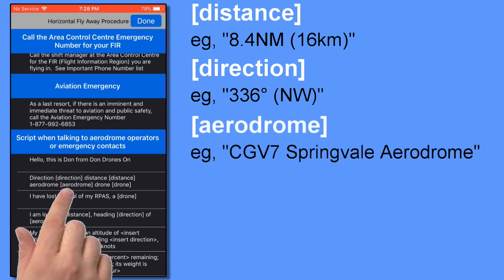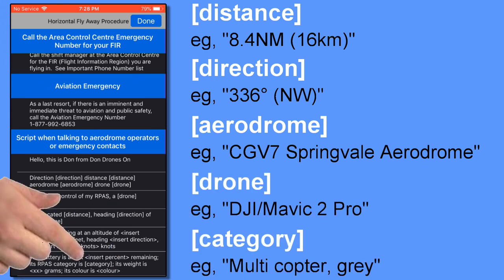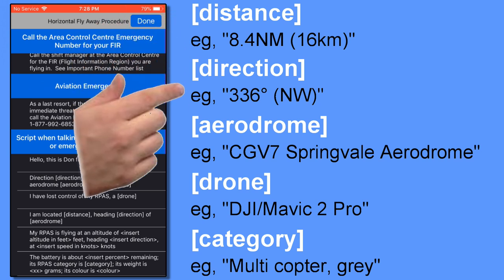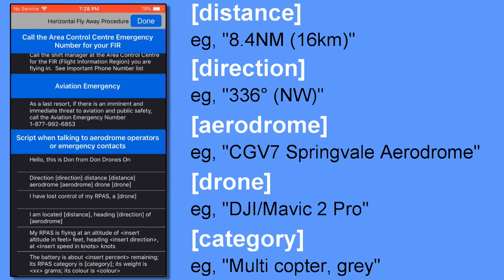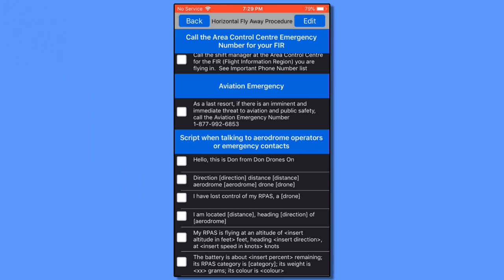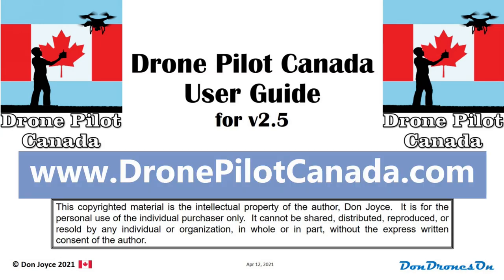It will also fill in whatever you've entered in the cat/markings field for your current drone. These parameters can be inserted in your script but must be named exactly as specified and must be enclosed in square brackets to be recognized by the app. But other than that, you can insert those variables into your script wherever you wish. Full details of how to tailor your flyaway scripts can be found in the free downloadable user guide available on www.dronepilotcanada.com.